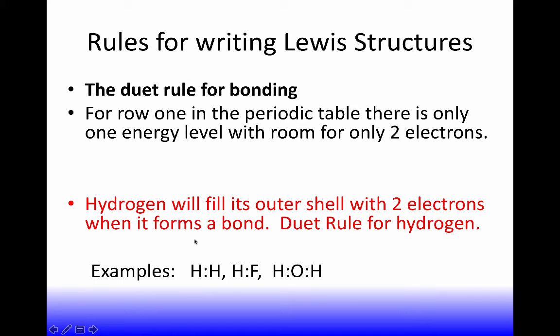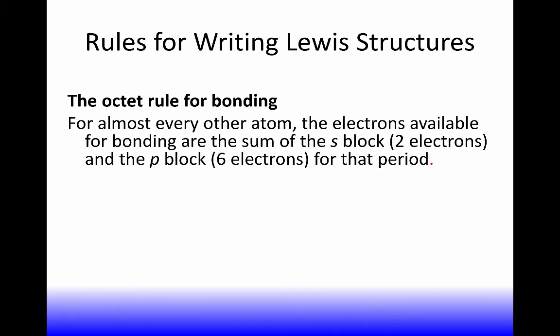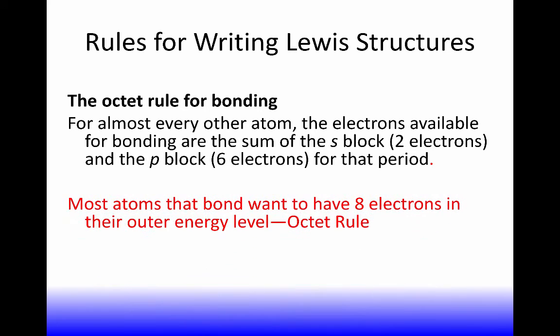And if you remember from the localized electron bonding model, that's because you've got an overlap of the electrons from half-filled orbitals, atomic orbitals. Now, the octet rule for bonding basically applies to most of the other elements. For almost every other atom, the electrons available for bonding are the sum of the two electrons in the S, and the six electrons in the possible electrons in the P for the period that the element is in.